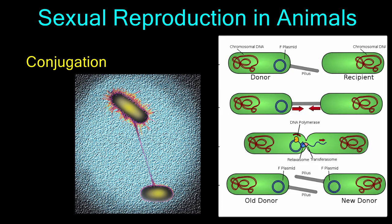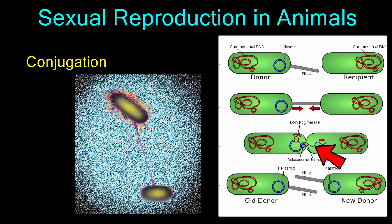During conjugation, the two cells connect using a thin tube called a pilus. Once the cells are connected, the donor cell transfers a small bit of genetic material to the recipient cell. After the exchange, the cells separate and undergo mitosis to produce genetically unique offspring.